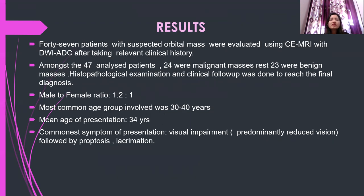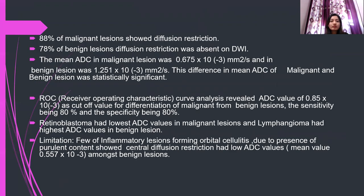Results. 47 patients with suspected orbital masses were evaluated using contrast-enhanced MRI with DWI-ADC after taking relevant clinical history. Amongst the 47 patients, 24 were malignant and the remaining 23 were benign. Histopathological examination and clinical follow-up were done to reach the final diagnosis. Male to female ratio was 1.2:1. The most common age group involved was 30 to 40 years, with a mean age of presentation of 34 years. The commonest symptom was visual impairment with predominantly reduced vision, followed by proptosis. 88% of malignant lesions showed diffusion restriction.